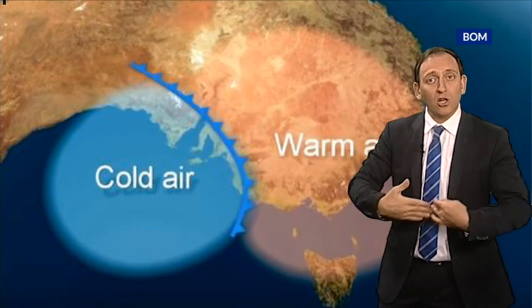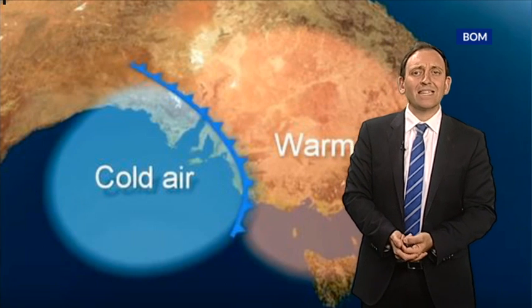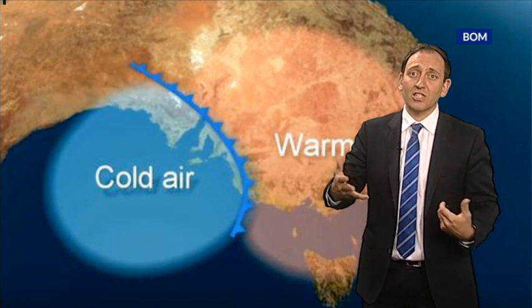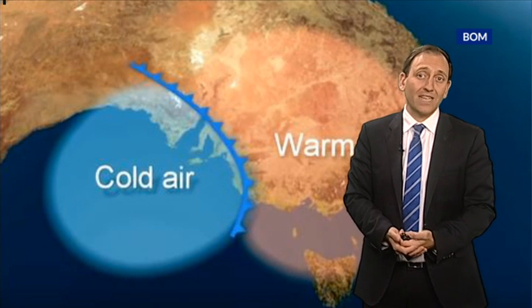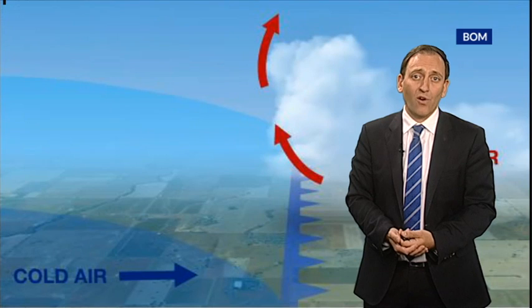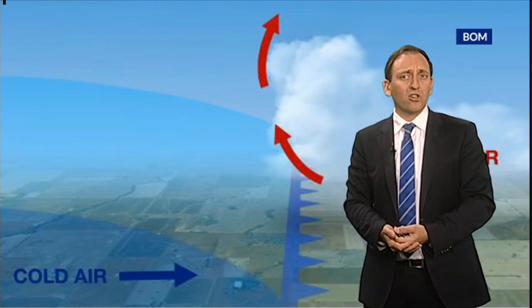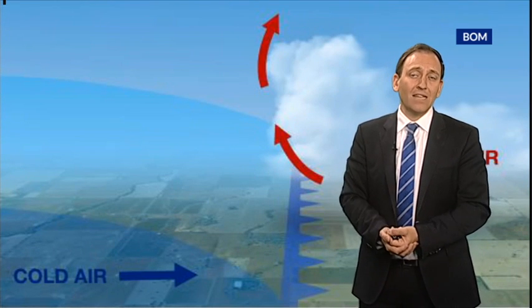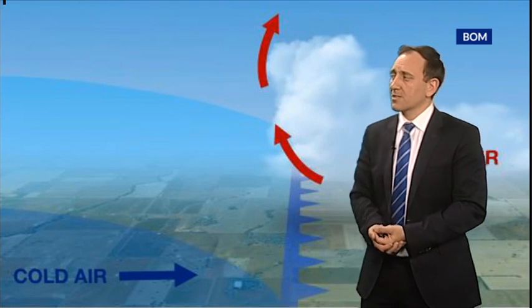So as a cold front moves through, you'll often see a sudden drop in temperatures. On occasion, that can be more than 10 degrees in 24 hours, but often you could see a drop of more than 5 degrees in a matter of minutes.